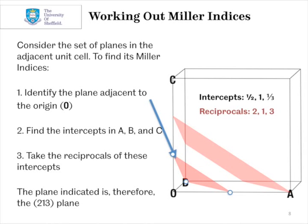We then take the reciprocals of those numbers. So the reciprocal of a half is two, of one is one, and one third is three. So the reciprocals are two, one, three. And that means that the plane indicated is therefore the (213) plane.